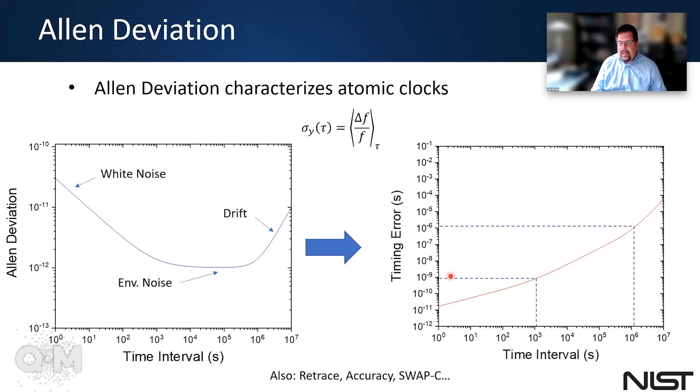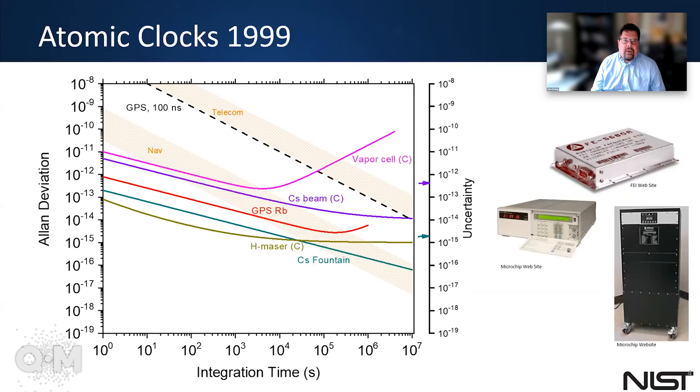If you want to time something at a thousand seconds, you might be able to get a nanosecond of error. And for this particular type of clock, if you want to time something over a week, then it might be much larger than that. And there's a number of other elements in clocks that are important, things like retrace, of course, swap C accuracy and other things like that.